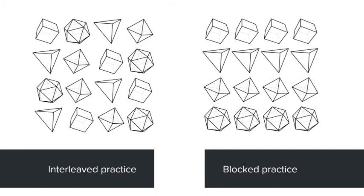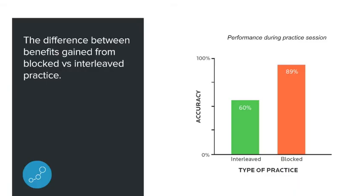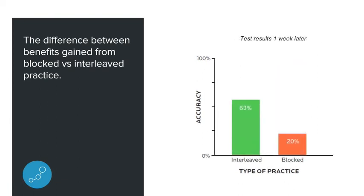Let's look at the results of the experiment. During the practice sessions, students doing blocked practice significantly outperformed those that did interleaved practice. This is often how textbooks and worksheets are laid out, where you drill one specific concept or skill at a time. The problem is it leads to a false sense of accomplishment during a practice session. One week later, when these students wrote a test, those that did interleaved practice significantly outperformed those that did blocked practice.